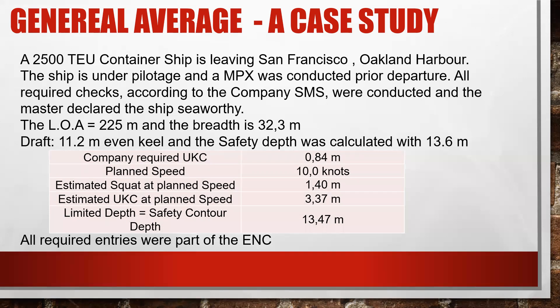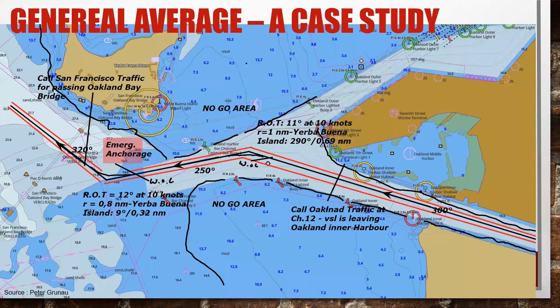The planned speed for the passage is 10 knots. The estimated squat at the planned speed is 1.4 meters and the estimated under-keel clearance at the planned speed is 3.37 meters. The safety contour depth is 13.47 meters. All required entries were part of the ECDIS and the voyage plan was signed by the master and the officers.